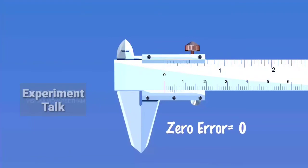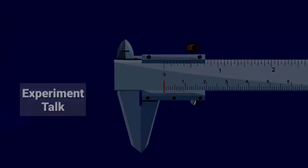Check for zero error. Here, no error is visible as the 0 division of the main scale coincides with the 0 of the Vernier Scale.